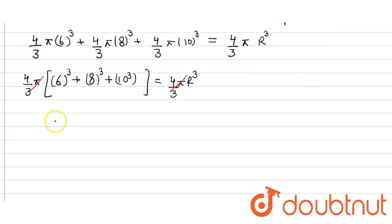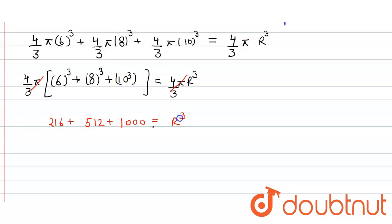Now we solve further: 6³ = 216, 8³ = 512, and 10³ = 1000. We simply add them to get r³ = 1728, and this number is nothing but the cube of 12.